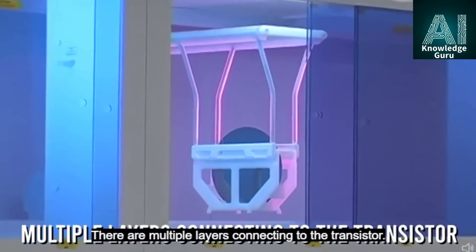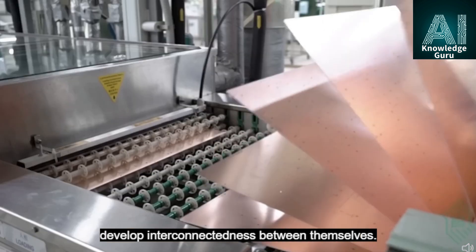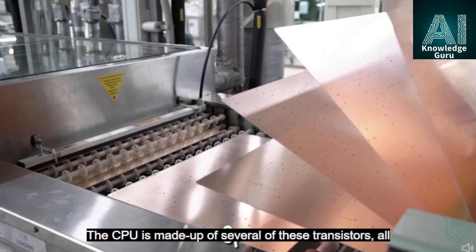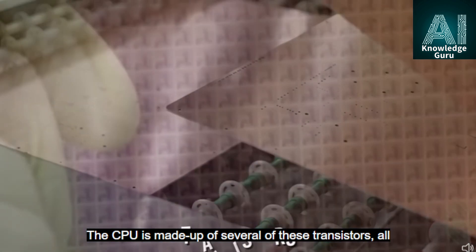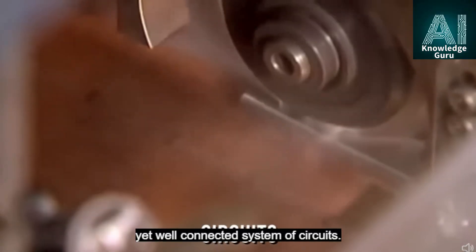The process ends up in the formation of the entire transistor. There are multiple layers connecting to the transistor. The transistors are made in such a way that they develop interconnectedness between themselves. The CPU is made up of several of these transistors, all of which are connected to each other, forming a complex yet well-connected system of circuits.